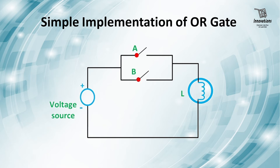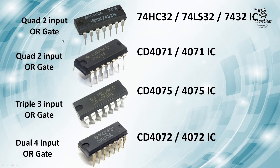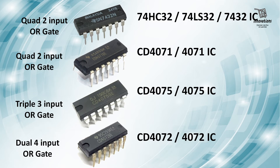Now we will see which ICs are available to implement an OR gate. There are different variations: a two-input OR gate is 74HC32, SN7432, 74LS32, or simply the 7432 IC. Another is the quad two-input OR gate CD4071. A three-input OR gate is CD4075. A dual four-input OR gate is CD4072. So there are different ICs representing different types of OR gates.